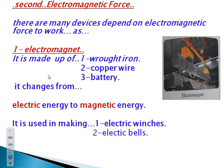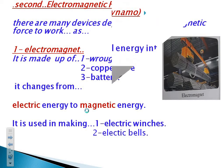This electromagnet or device changes from electric energy into magnetic energy — electric into magnetic. As you see in this picture, electric winches are used in factories for different uses to lift heavy iron blocks. It is also used in making electric bells. It is very important to know: the electromagnet changes from electric energy into magnetic energy.